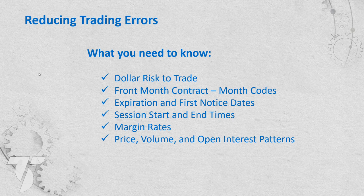Futures Info includes the dollar risk to a trade, what the front month contract is, the month codes for a particular future, expiration and first notice dates, session start and end times, the current margin rate at TradeStation, and some price, volume, and open interest patterns. A lot of times you want to determine the front month on your own — many people think there's a fixed rollover date, but that's not true. Every trader can pick when they want to roll over, and what really matters is trading the future with the most volume and open interest.